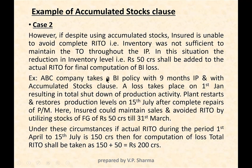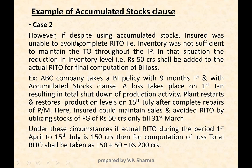In Case 2, despite utilizing accumulated stocks, the insured was unable to avoid complete reduction in turnover — meaning the inventory was not sufficient to maintain turnover throughout the entire indemnity period. In this situation, the reduction in inventory level of 50 crores was not sufficient, and it shall be added to the actual turnover reduction for the final computation of loss.